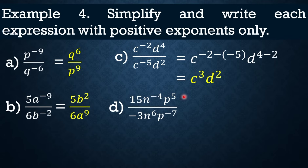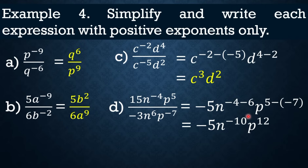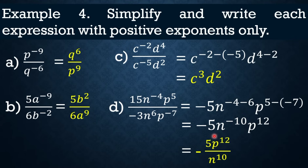Last example: 15N raised to negative 4 P raised to 5, over negative 3N raised to 6 P raised to negative 7. Divide the coefficients: 15 divided by negative 3 equals negative 5. For N: subtract exponents: negative 4 minus 6 equals negative 10. For P: 5 minus negative 7 equals 12. So we get negative 5 N raised to negative 10 P raised to 12. Since N has a negative exponent, move it to the denominator: the final answer is negative 5 P raised to 12 over N raised to 10.